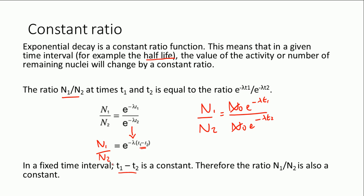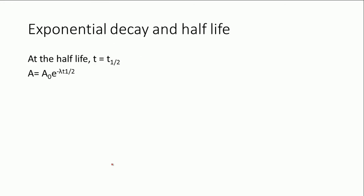You might get questions on that — showing from a half-life curve that this is a constant ratio property. You just take two time intervals which are the same, and show that the ratio N1 over N2 is also the same. Now let's look at how we arrive at that expression we had earlier: lambda times t-half equals 0.693, which is also equal to the natural log of 2.